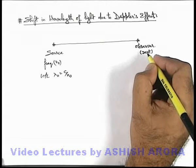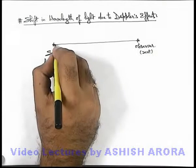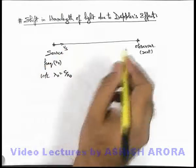Which we already studied in the previous section. And say the source is moving with the speed v s towards the observer.